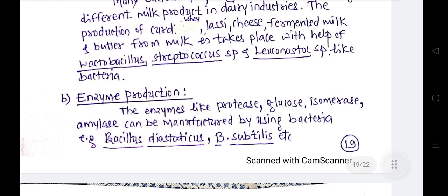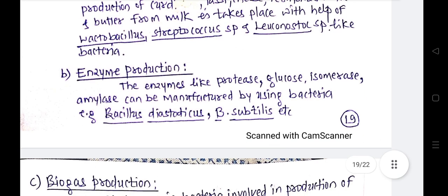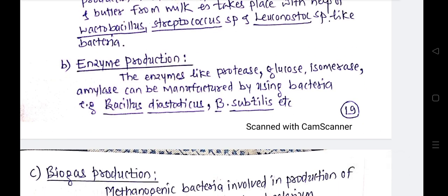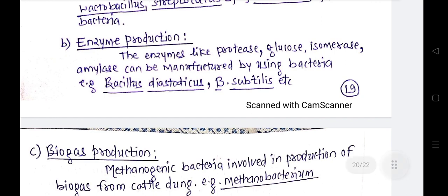At the industrial level, bacteria perform their role in enzyme production. Enzymes like protease, glucose isomerase, and amylase can be manufactured using bacteria. For example, Bacillus and Diastatic bacteria, as well as Bacillus subtilis, are involved in enzyme production.